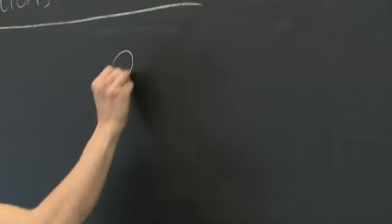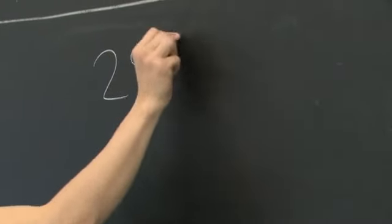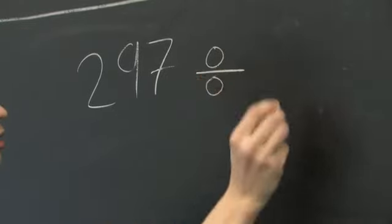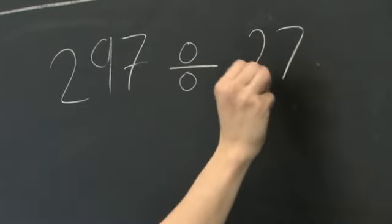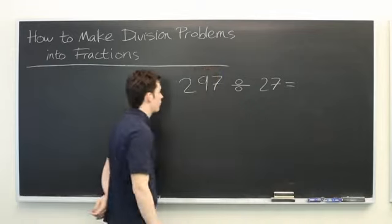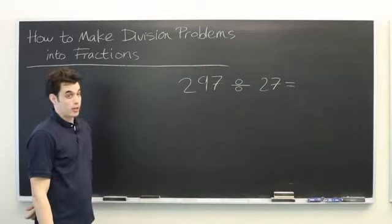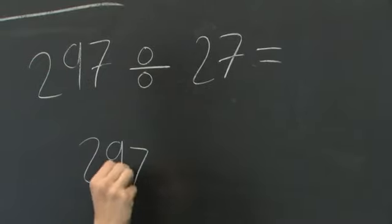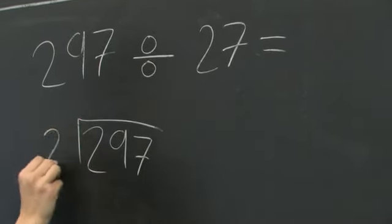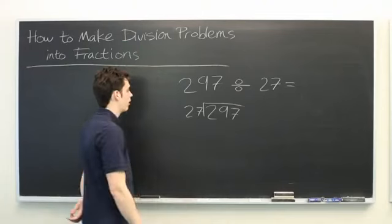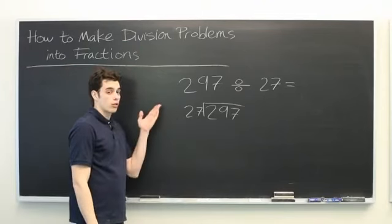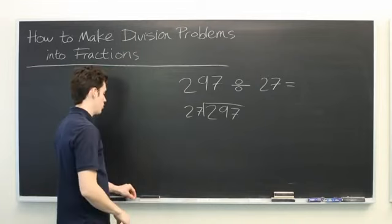Let's look at the problem 297 divided by 27. Another way that we might see this is in long division form. Regardless of how it's presented here, we can turn both of these problems into a fraction.